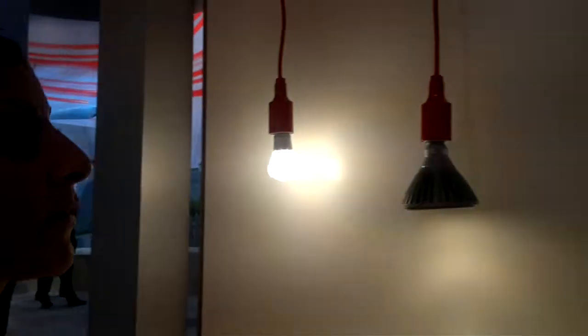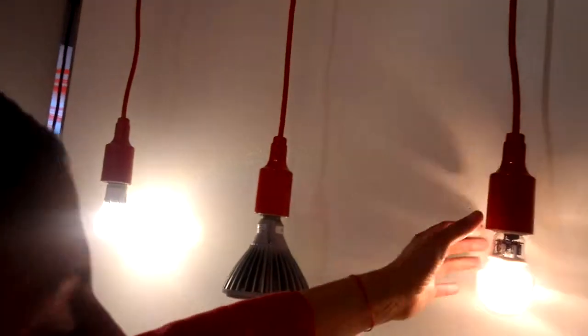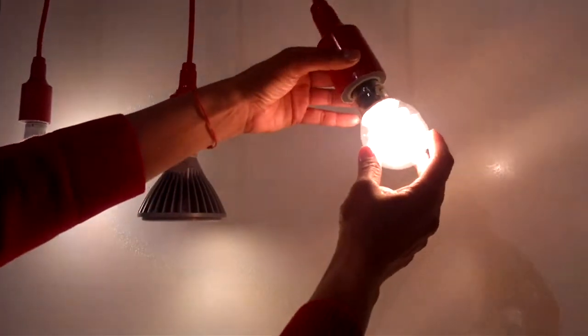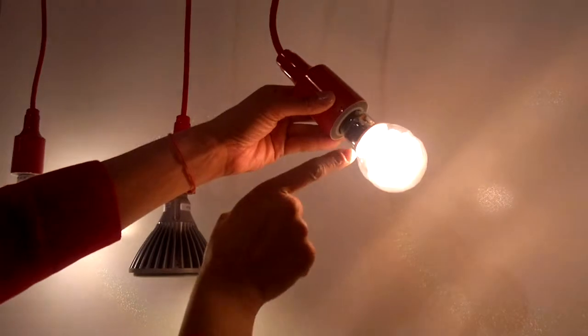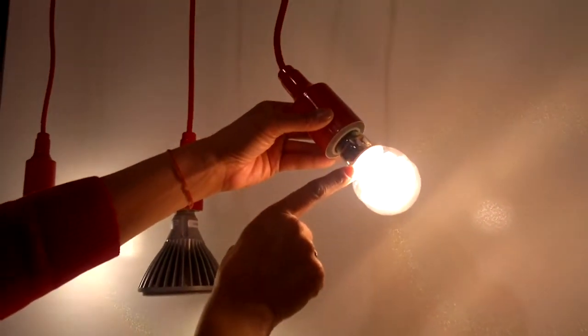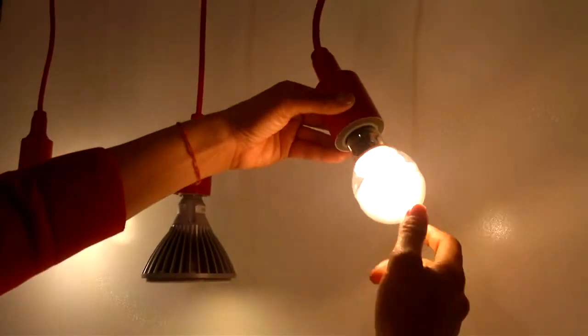This bulb right here is very interesting as well. This bulb is what we call a hybrid technology. It encases a halogen capsule in the middle that turns on instantly and a CFL that wraps around it.